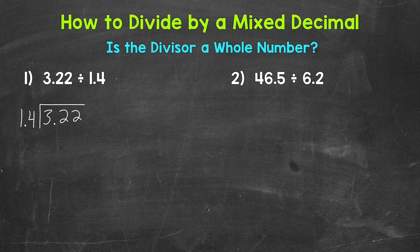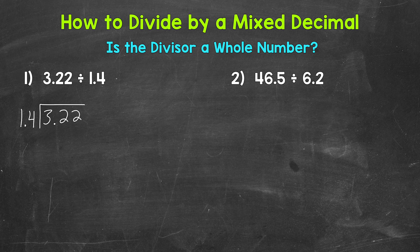Now we have our division problem set up. But before we go through the division process, we need to check: is the divisor a whole number? 1 and 4 tenths is not a whole number, so we need to make it a whole number. We do this by multiplying the divisor by a power of 10, which shifts the digits to the left. We can think of this as moving the decimal to make the divisor whole — moving it one place to the right gives us a whole 14.